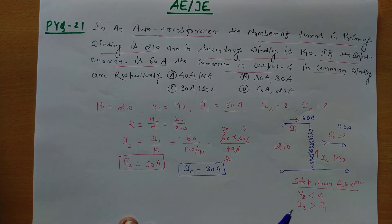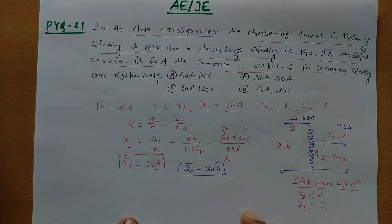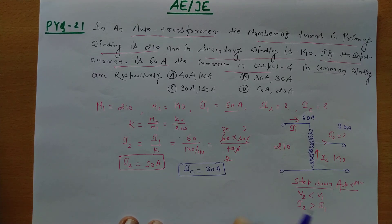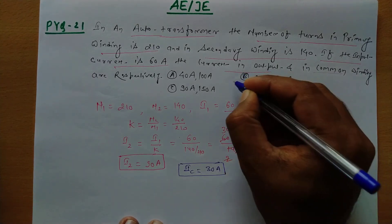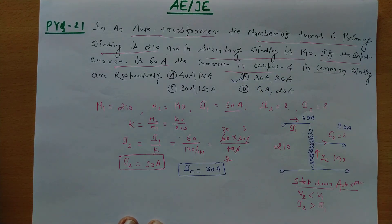This is a good conceptual question, and just by knowing some basic things we can solve this problem in a fraction of a second. The answer for PYQ number 21 is Option B — 90 ampere output current and 30 ampere common winding current. Thank you.